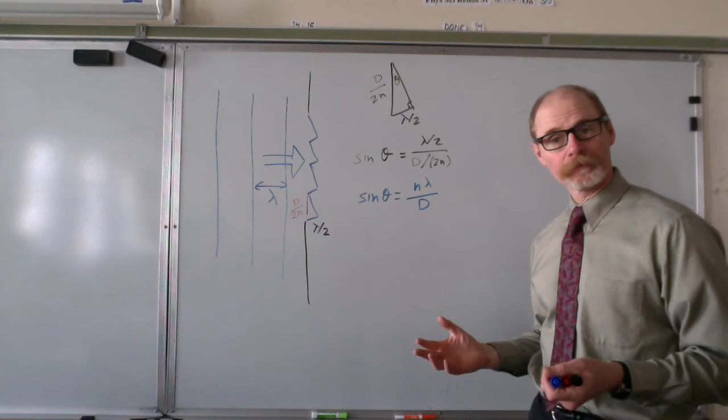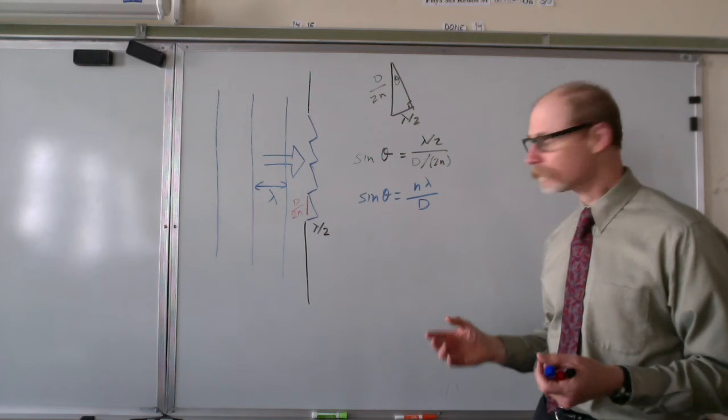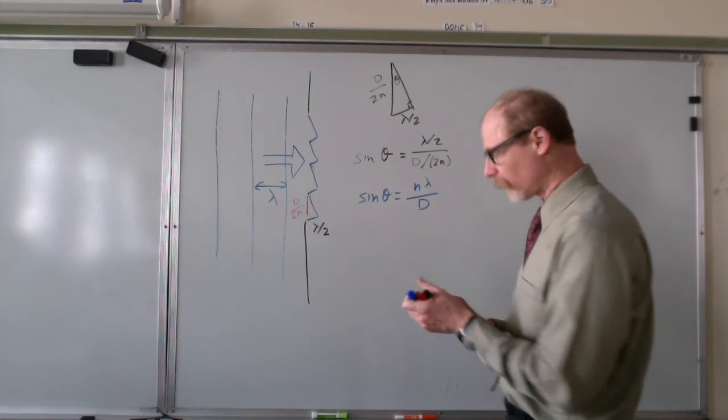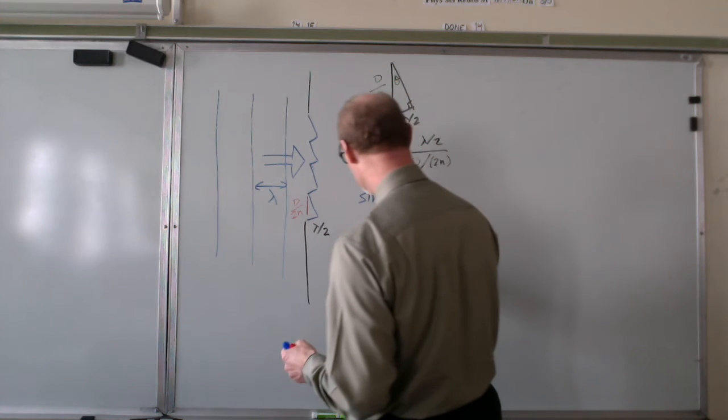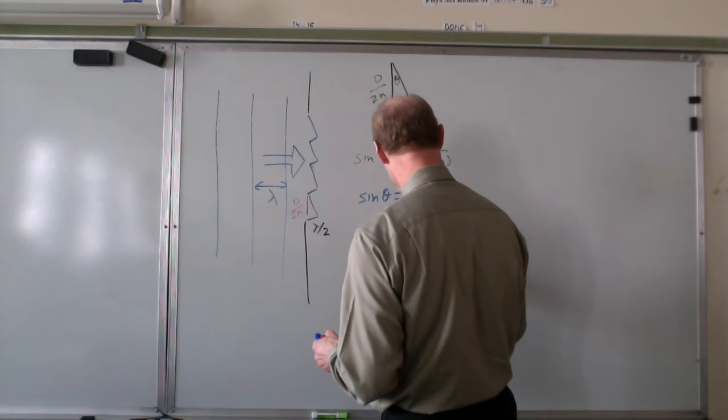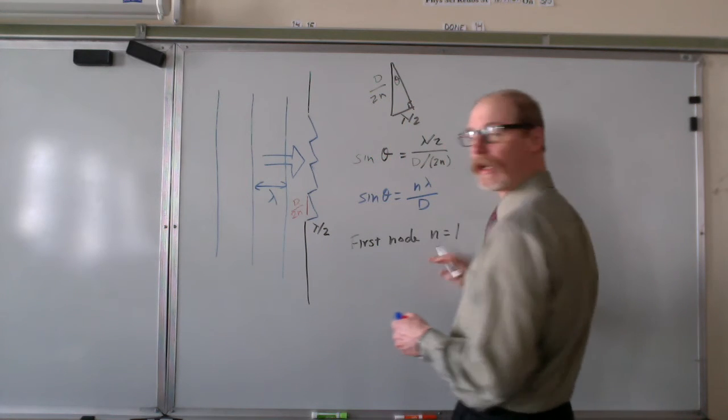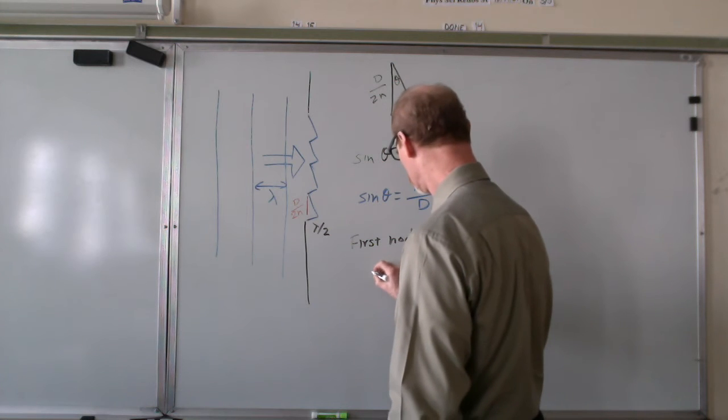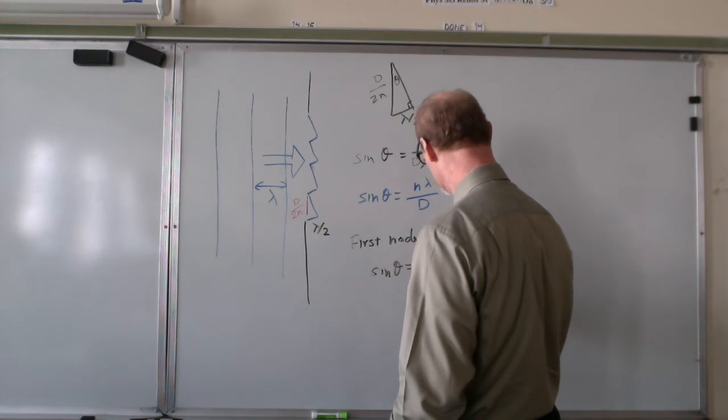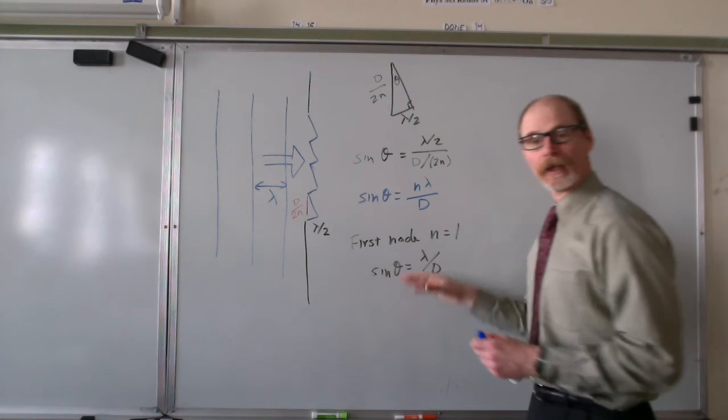Now let's see what this tells us. For the first case, so for the first node, that's n equals 1. Sine theta equals lambda over d.